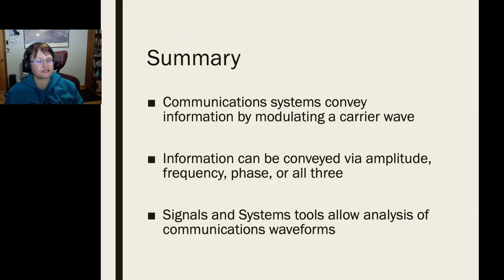In summary, communication systems convey information in both analog and digital form by modulating all the parameters of a carrier wave, which is usually modeled as a sinusoid. This information is conveyed by amplitude, frequency, and phase, or combinations of all three to be as efficient as possible. We will use our signals and systems tools to analyze communications waveforms. In the next section, we will talk about how to analyze amplitude modulation systems. Thank you for listening.